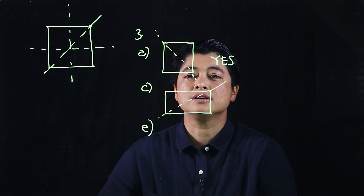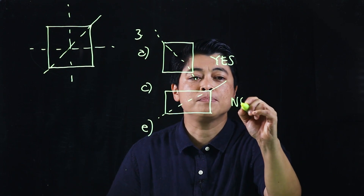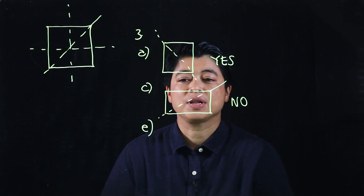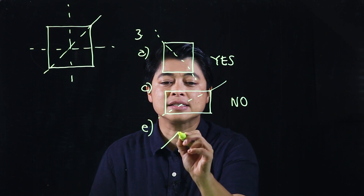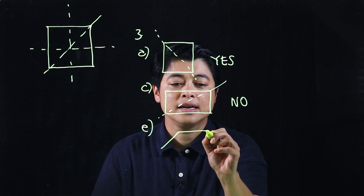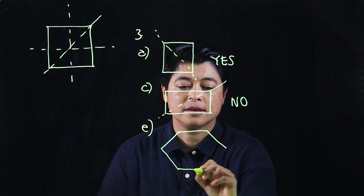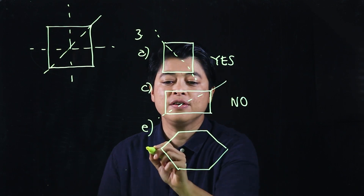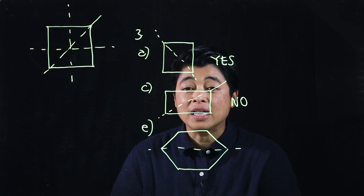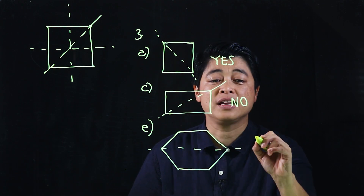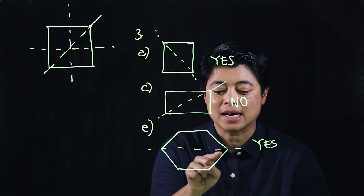In C, it's a rectangle and they cut it diagonally. If you fold over, that would not be symmetrical. In E, it's a hexagon, and if you fold over this way, that gives you the same figure — so yes, that is a line of symmetry.